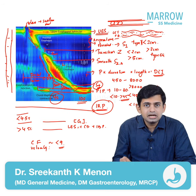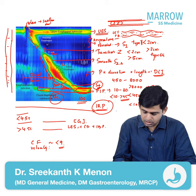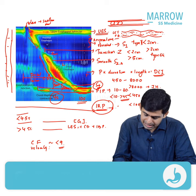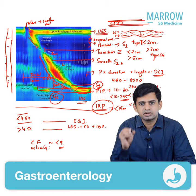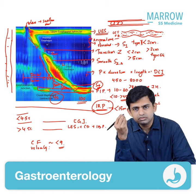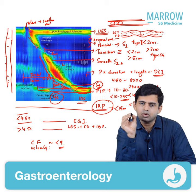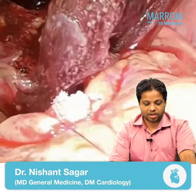IRP, or the integrated relaxation pressure, is usually less than 15 millimeters of pressure. More than 15 is abnormal.